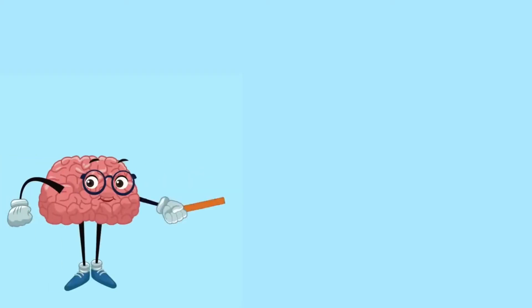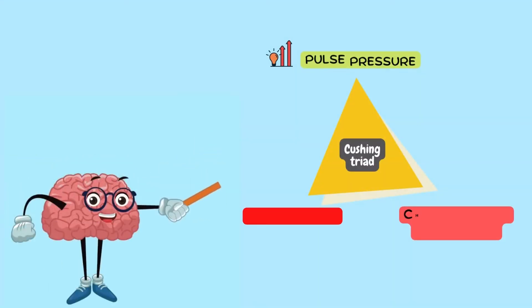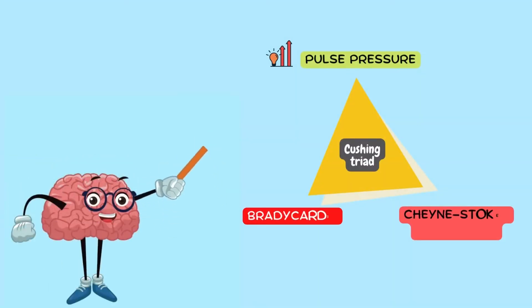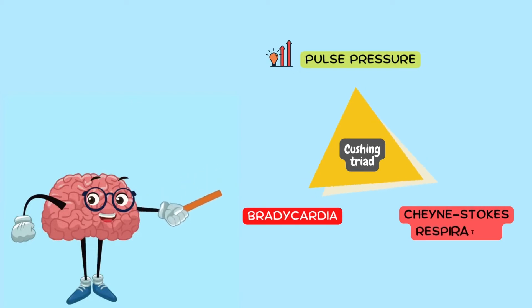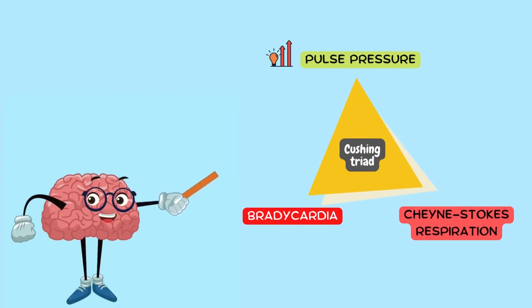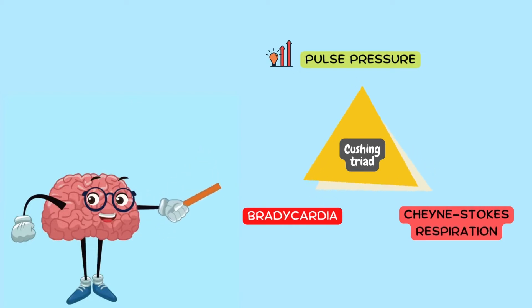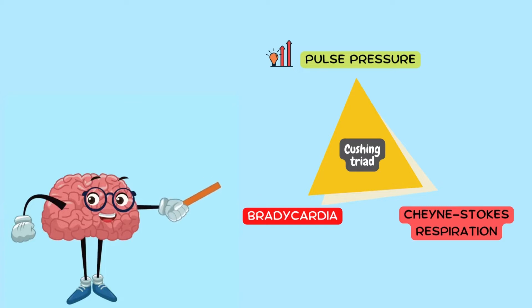Since it is a triad, it is composed of three signs: first, raised pulse pressure; second, bradycardia; and third, Cheyne-Stokes respiration, or deep, slow, irregular breathing.